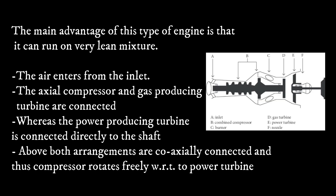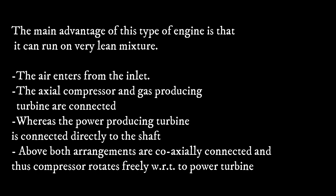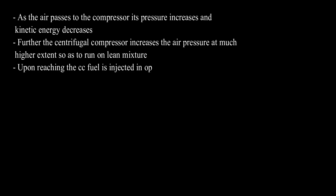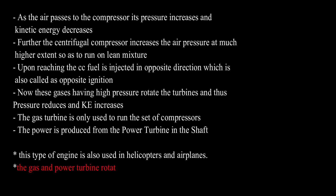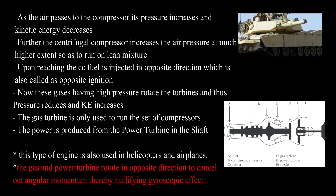These engines are able to run on a pretty lean mixture. Air enters from the inlet. The compressor and gas turbine are interconnected, whereas the power-producing turbine is connected directly to the shaft. Both connections are free to move, so the compressor rotates freely with respect to the power turbine. As air passes through the compressor, its pressure increases and kinetic energy decreases.